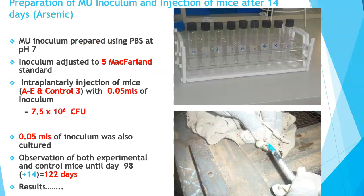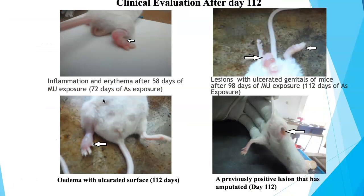After 14 days of monitoring, the inoculum was prepared. Using sterile phosphate buffer solution at pH 7, the cultured Mycobacterium ulcerans was diluted and compared to a 5 McFarland standard, containing approximately 7.5 × 10⁶ colony forming units. Using a sterile syringe and needle, 0.05 mL of inoculum was injected intraplantar into the hind paws of mice in groups A through E, as well as the relevant control group.